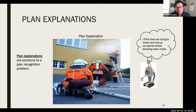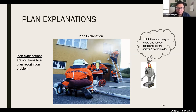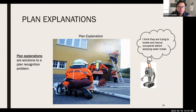Specific to plan recognition, we have what's called a plan explanation, also called a plan hypothesis in some literature. Plan explanations are solutions to a plan recognition problem. Since the inference task can be many different things, a plan explanation is just a solution to whatever plan recognition problem we're trying to solve. For example, a system observing firefighters might say: 'I think they're trying to locate and rescue occupants before spraying water inside' — that's its best explanation for the plan being observed.